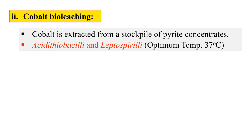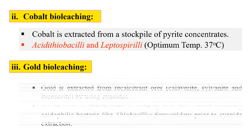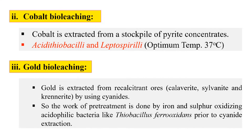The next example of bio-leaching is gold bio-leaching, in which we extract gold. Gold is generally extracted from its recalcitrant ores — calaverite, sylvanite, and krenite — by using cyanides. The biomining bacteria decompose the ore and also concentrate it.